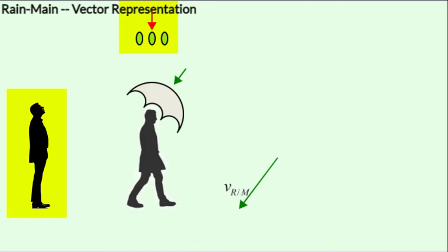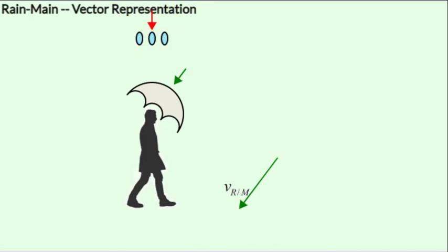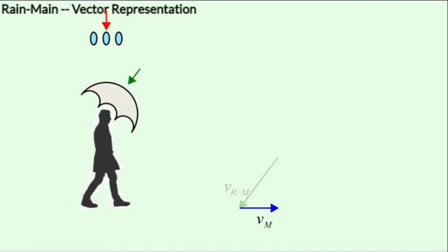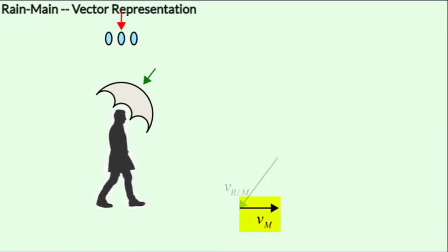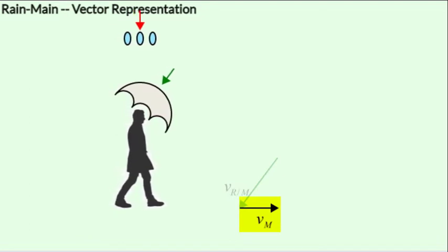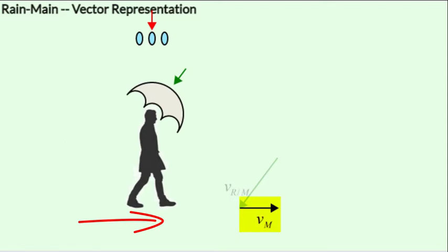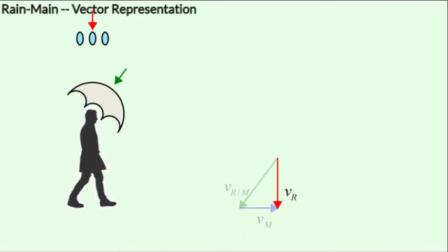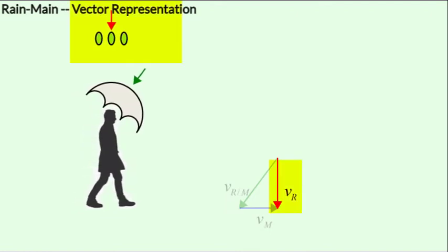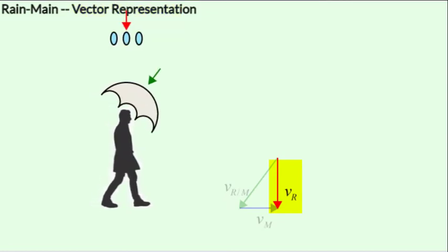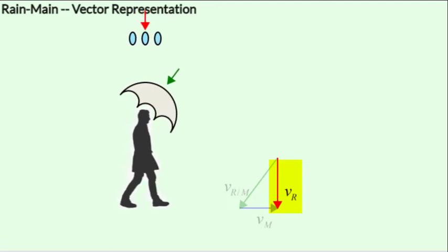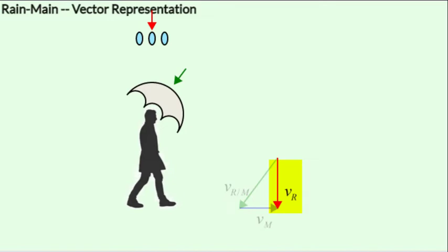The stationary man on the ground sees the rain as falling vertically. In this case, the man walks to the right, so we represent the velocity of the man with respect to the ground as vm. Since the man moves to the right, vm will also point to the right. Its magnitude will be determined by how fast the man walks — the faster he walks, the longer will be this vector. vr is the vector representing the velocity of the rain with respect to the ground. So since the rain falls vertically downwards, this vector will be pointing downwards. It's also possible that the rain may not be vertical — for example, if there is a wind — and then this arrow may not point vertically downwards. We shall see some cases later on in this lesson.